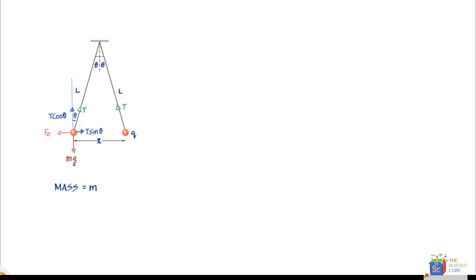If this ball is to remain stationary, you'll quickly observe that T sine theta needs to be equal to Fe. That's the only condition when it will be in equilibrium. So let's write this equation where T sine theta equals the electrostatic force Fe, which is k q squared divided by x squared.